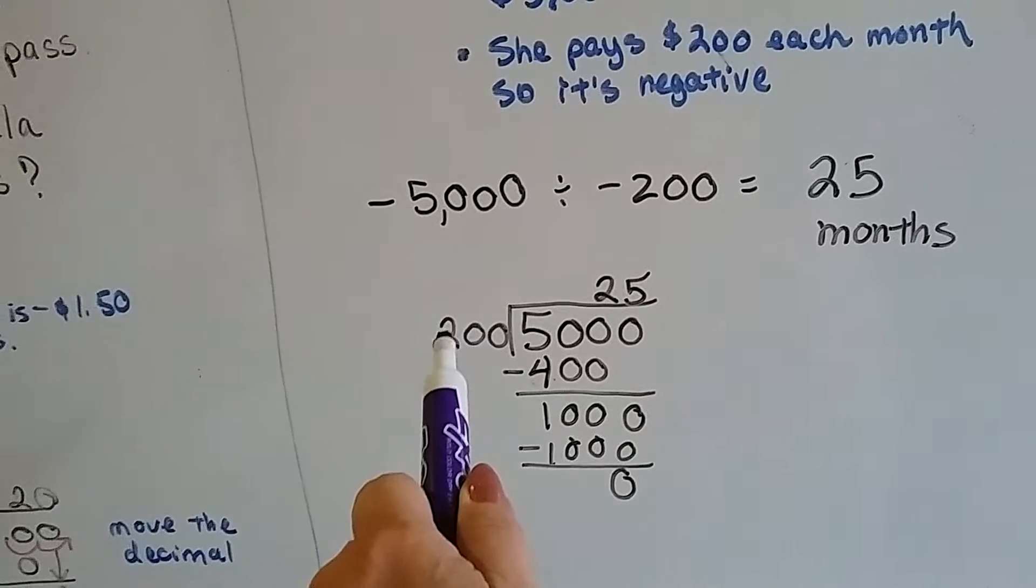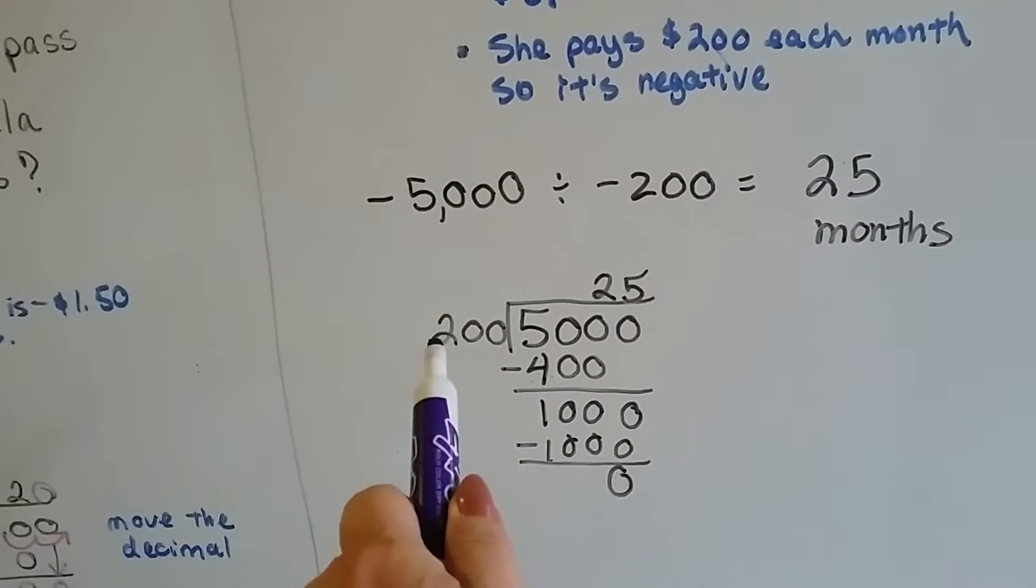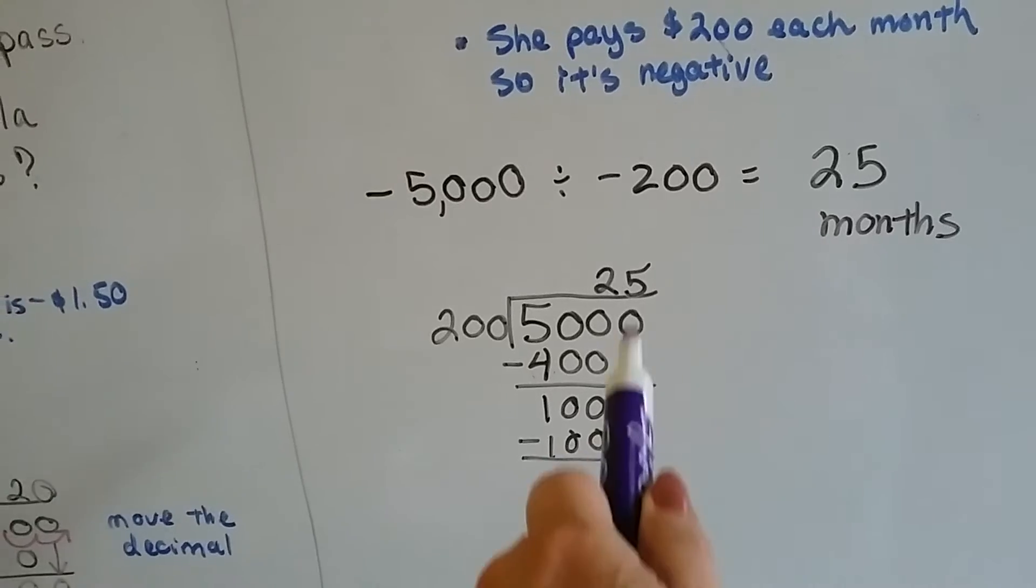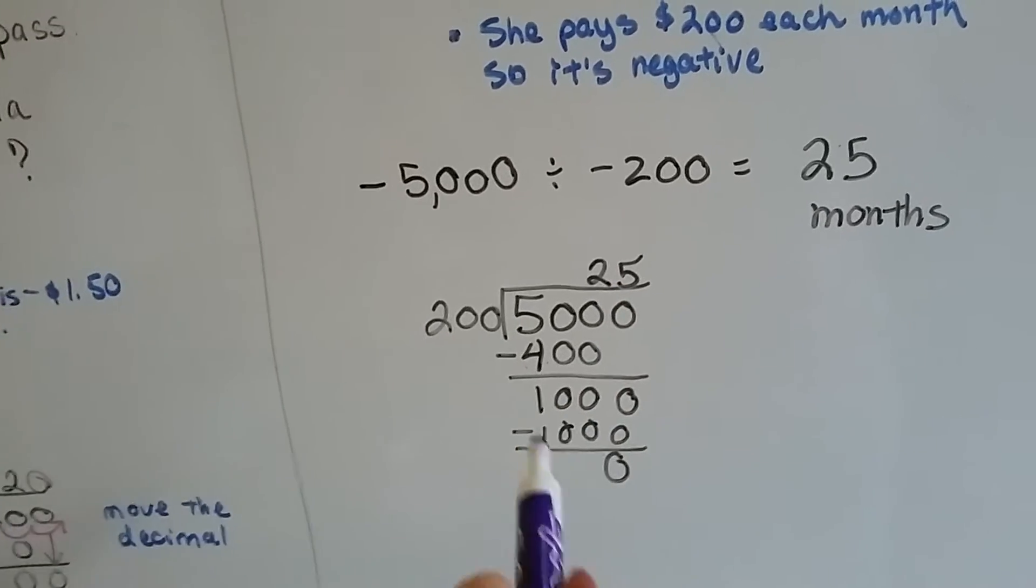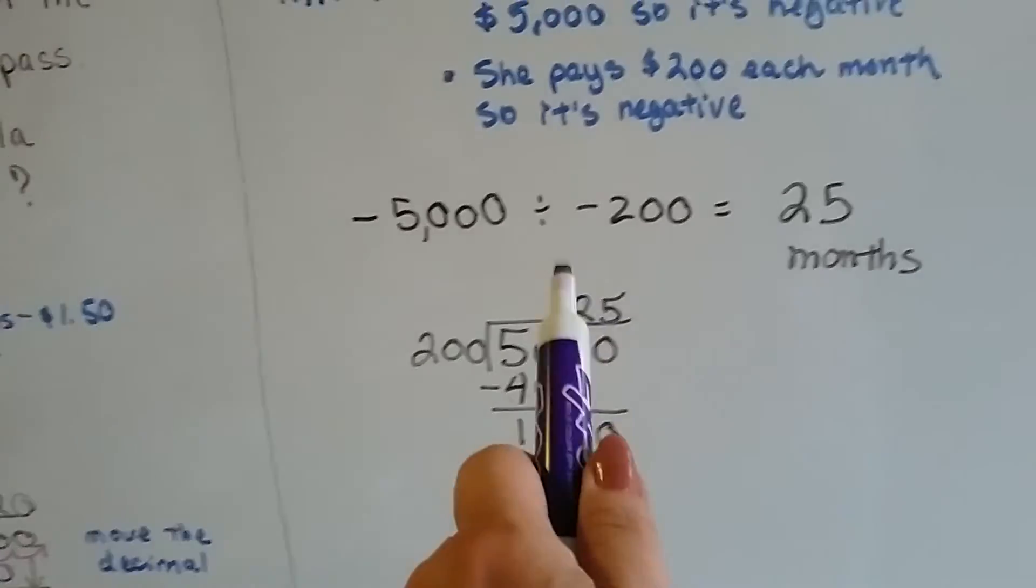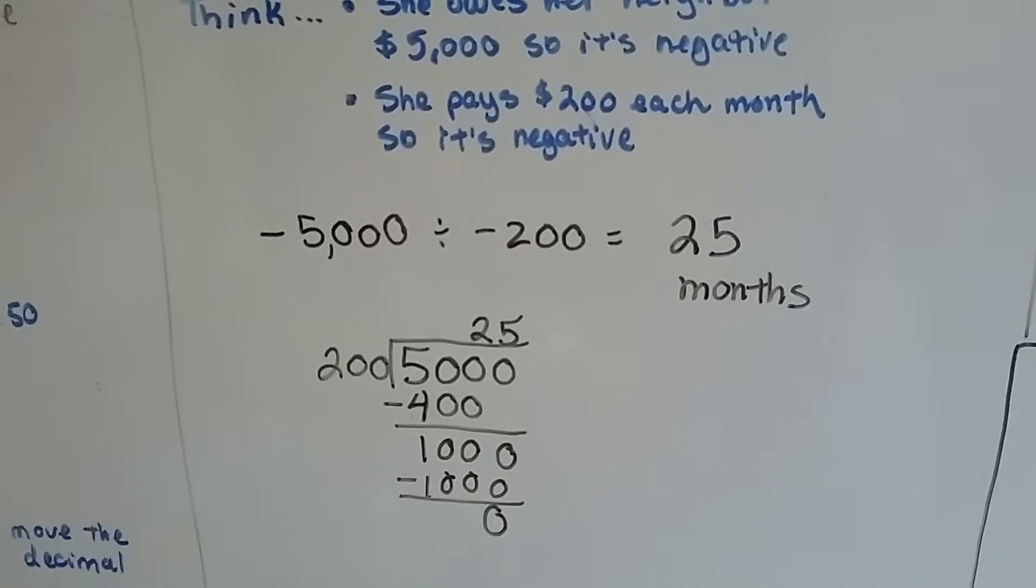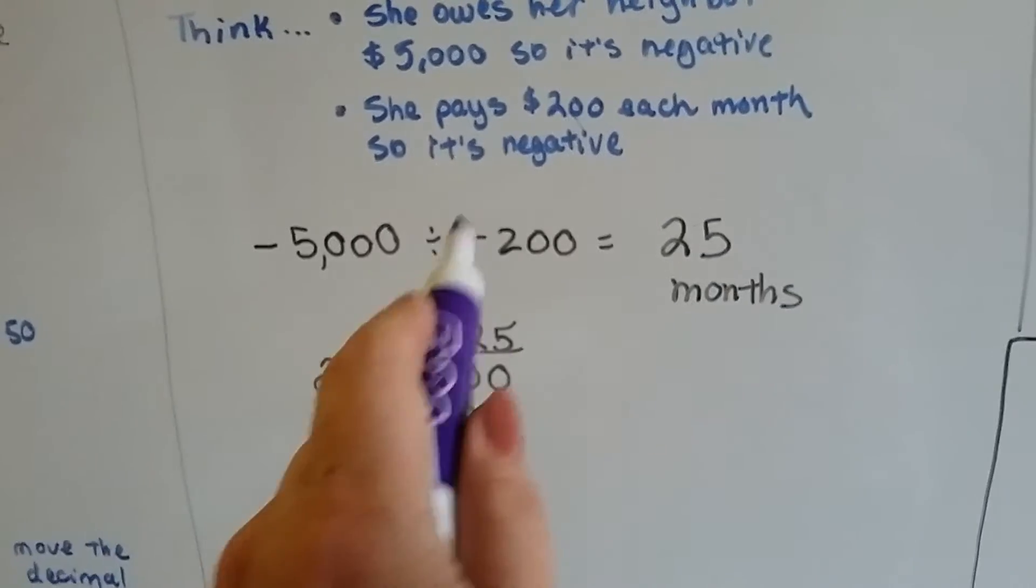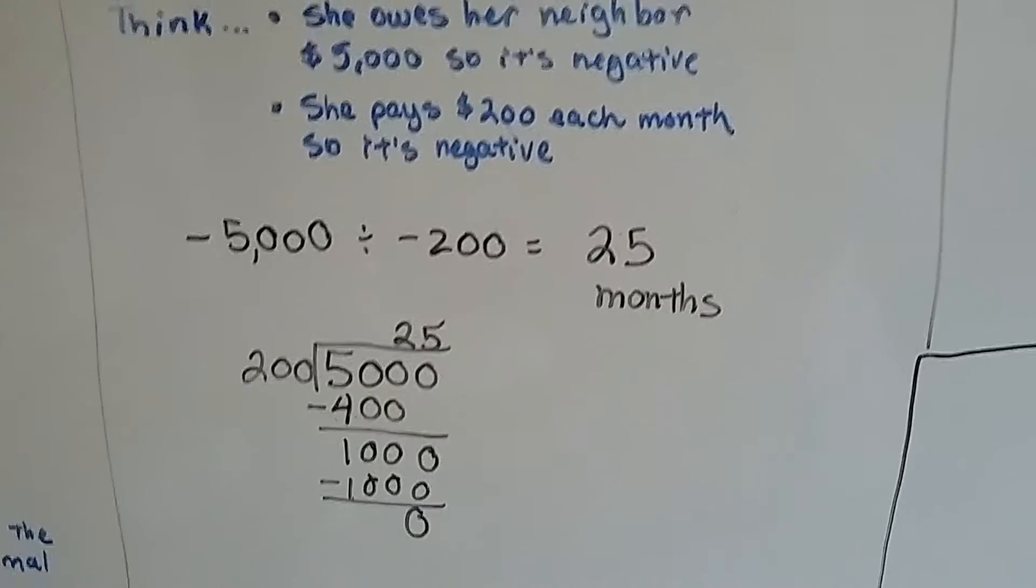We ask ourselves, how many times can 200 go into a thousand? Well, 200 times 5 is 1,000, so we put our 5 up here and we do our subtraction, get a remainder of zero. And we know that she has to do it for 25 months. And these are both negative, so we have a positive for an answer because we have like signs.